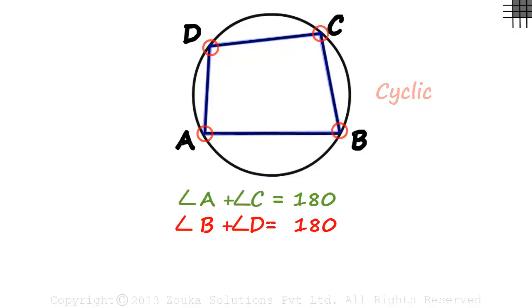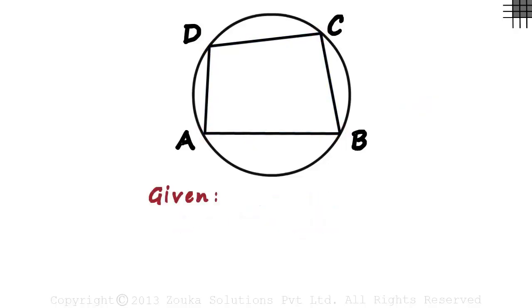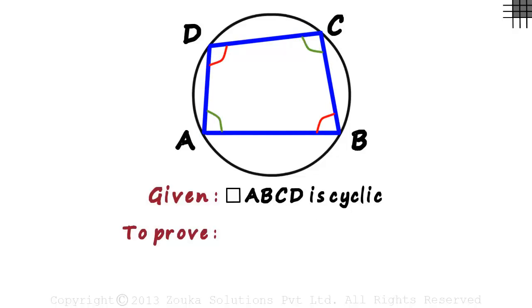Of course, it's an important property, but we need to prove this result. We are given that quadrilateral ABCD is cyclic, and we have to prove that its opposite angles add up to 180 degrees.